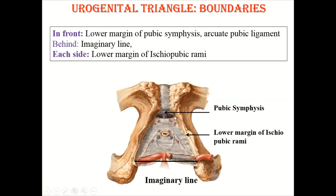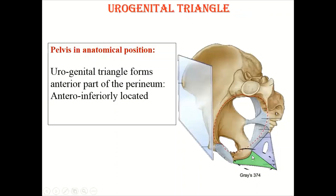This triangle has a number of layers as you go from superficial to deep. In anatomical position when the patient is standing, you go from below upwards; in lithotomy position when the patient is lying on their back with knee and hip joints flexed, you go from superficial to deep. Anatomically the urogenital triangle forms the anterior inferior part of the perineum.